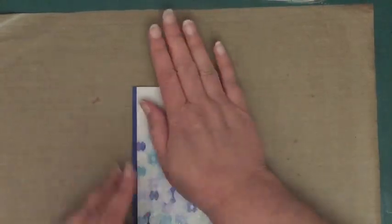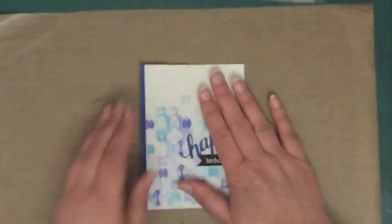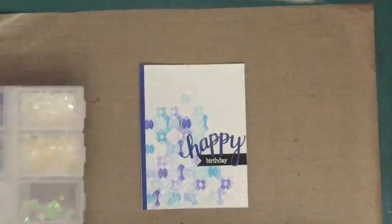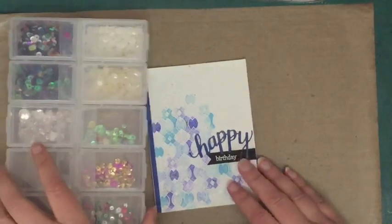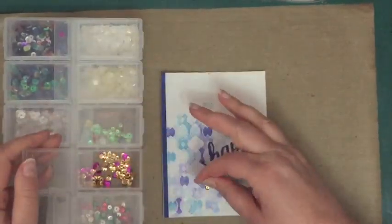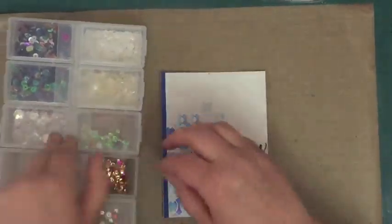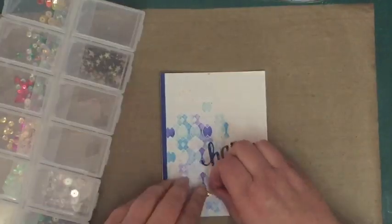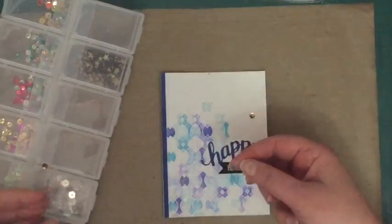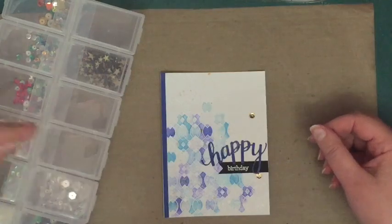So right now I'm using the multi-mat, multi-medium matte from Ranger to stick that sentiment down, and I'm also going to use the same adhesive to stick down these sequins. So I decided the gold splatters that I put on earlier weren't quite gold enough, so I wanted to add some gold sequins along with some clear sequins. And right now see that sequin, it flicked.